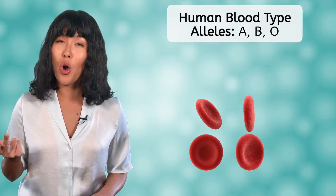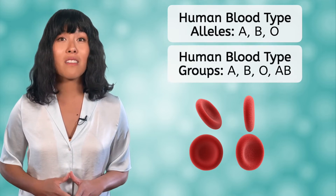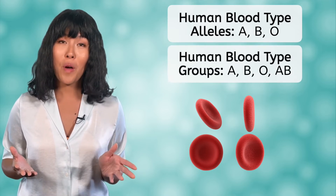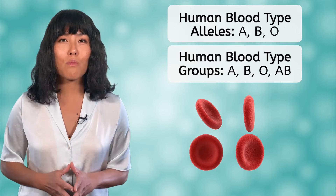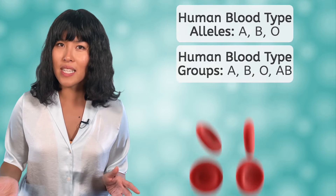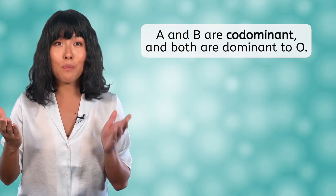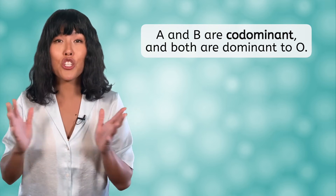A good example of a trait with multiple alleles is the human blood type. There are three possible alleles: A, B, or O. The phenotypes, or blood type groups, that result are A, B, O, and AB. With more than two alleles, how do we know which is dominant? In this case, there is co-dominance between A and B, but both A and B are completely dominant to O.